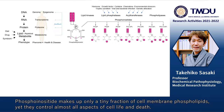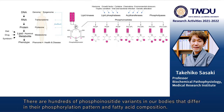Phosphoinositide makes up only a tiny fraction of cell membrane phospholipids, yet they control almost all aspects of cell life and death. There are hundreds of phosphoinositide variants in our bodies that differ in their phosphorylation pattern and fatty acid composition.